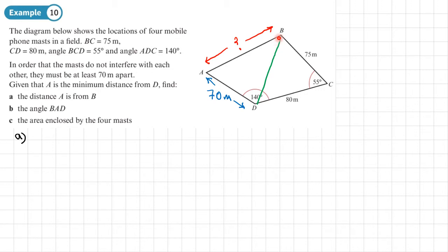So to do that, two sides and the angle between, I want to find a third side - that's going to be the cosine rule. So the length of the side I want to find squared, so BD squared, is going to be equal to 75 squared plus 80 squared minus 2 times 75 times 80 times the cosine of the angle between them, which is 55 degrees.